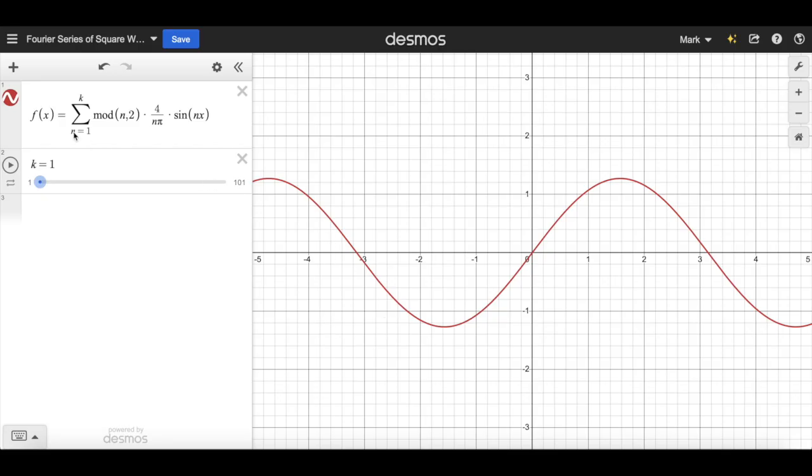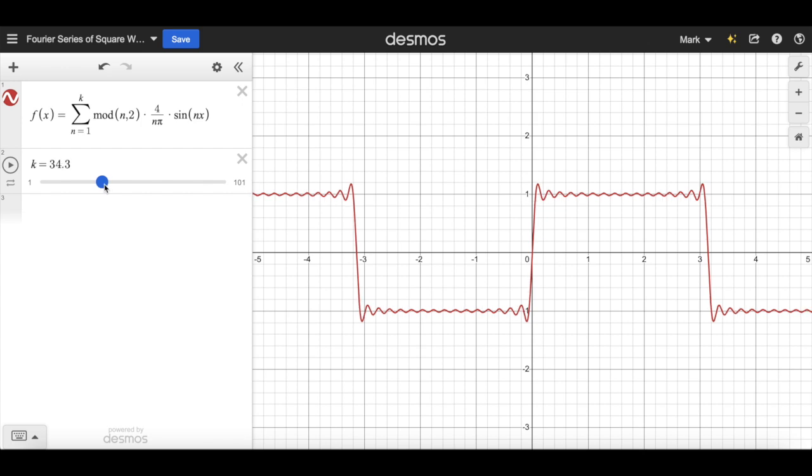Here on the graph, we have our formula that we have derived using Fourier series. And here we have the upper bound, which we can change using the slider. Currently, the upper bound is just 1. So it's just a sine wave. But notice what happens when we make it greater. The sum of sines gets closer and closer and closer to the shape of the square wave. Isn't that incredible?